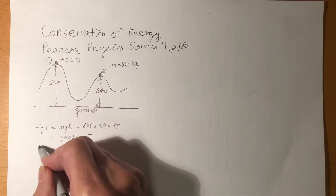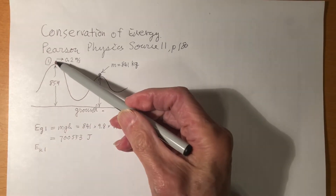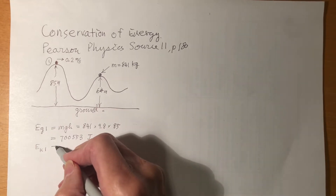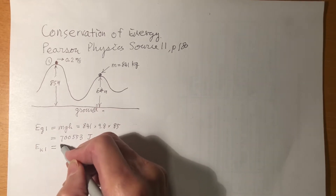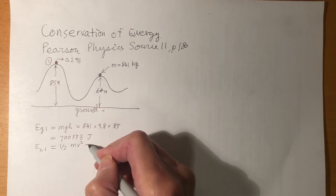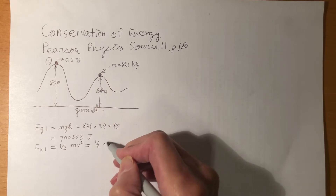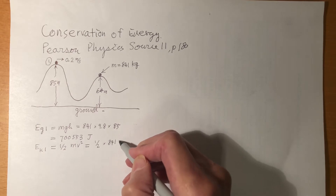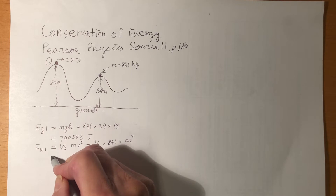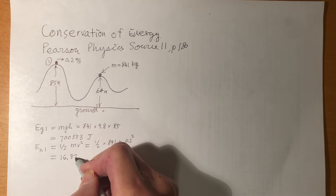Then he finds the kinetic energy at position 1. The velocity is given, so it's easy. He writes one-half MV squared, equal to one-half times 841 times 0.2 squared, and works this out to 16.82 joules.